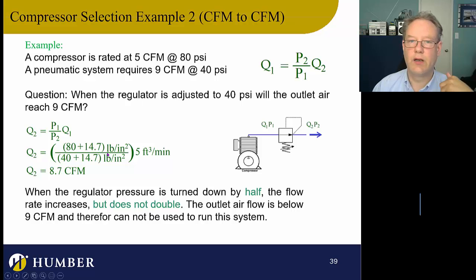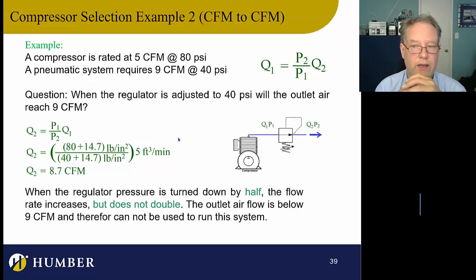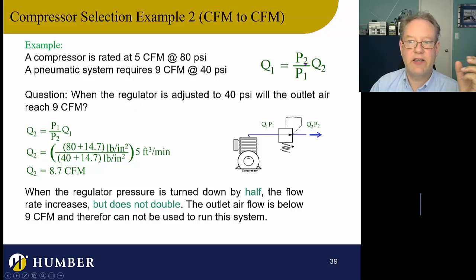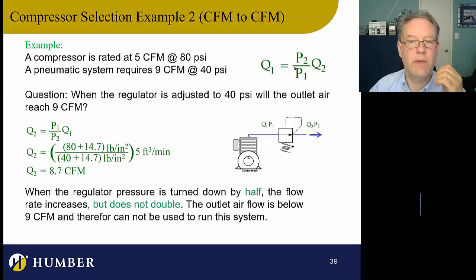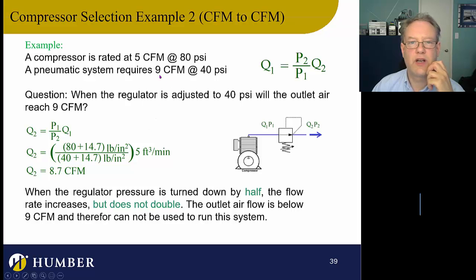First, convert PSI to PSIA: 80 + 14.7 = 94.7, and 40 + 14.7 = 54.7. My pressure is going down, so the flow rate will go up — I need a ratio greater than one, so I put the higher pressure on top and lower on bottom. The result is 94.7 / 54.7 × 5 = 8.7 CFM. We need 9 CFM — this is not going to work.